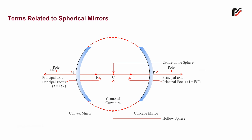f. Aperture. The width of the reflecting surface from which reflection takes place is the aperture.